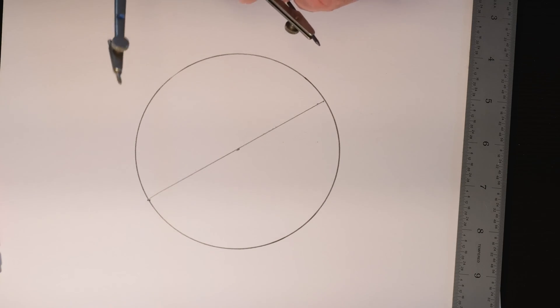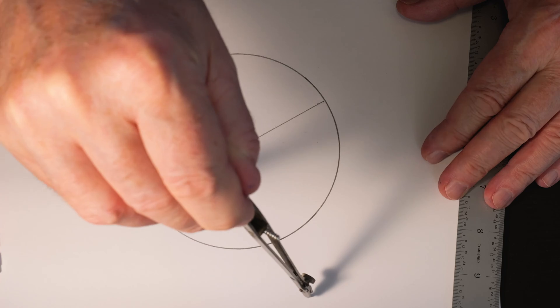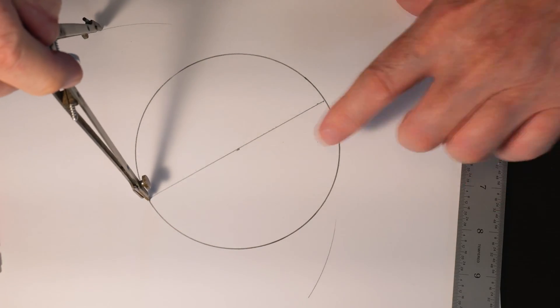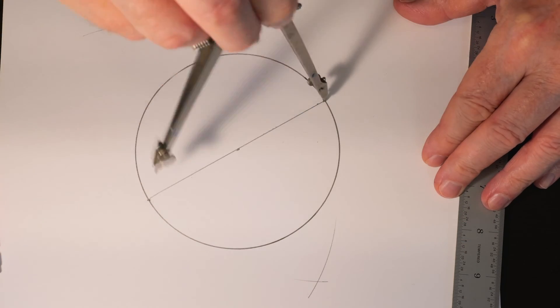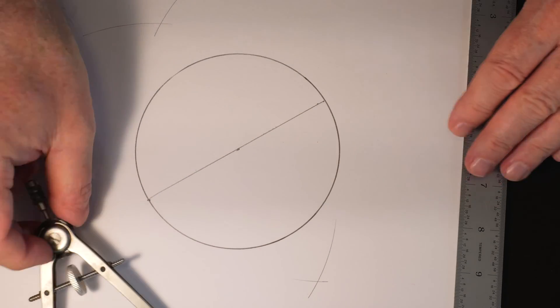For this I'm going to open up my compass quite a ways, place the point at one end of the diameter, make an arc on each side of the diameter, then come over here to the opposite end of the diameter and make another couple arcs.